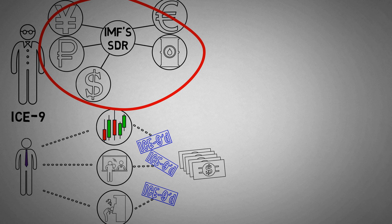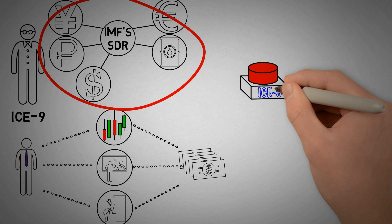The goal of ICE-9 is to freeze the system in place, and buy time while the elites implement their plan for a new international monetary system. Then the system can be released from its lockdown state. As Jim documents, ICE-9 isn't a theory, but is already set up and ready to be activated.